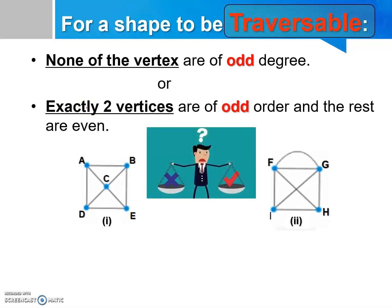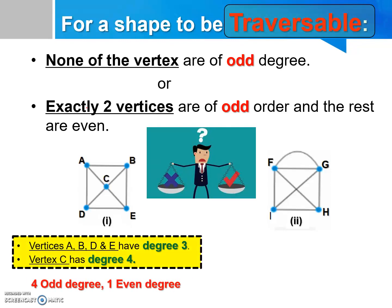Let's look at the example below. Can you predict or determine which of the networks is traversable? Let's analyze the questions together. For the first network, vertices A, B, D, and E have degree of 3, while vertex C has degree of 4. So we can conclude that it has 4 odd degrees and 1 even degree. Since the traversable network either has 0 or exactly 2 odd degrees, but the first network here has 4 odd degrees, hence it is not a traversable network.